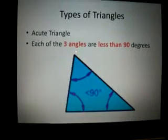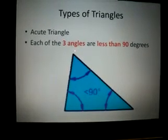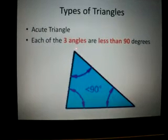Yet another type of triangle is known as an acute triangle. Each of the three angles are less than 90 degrees.